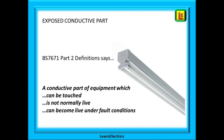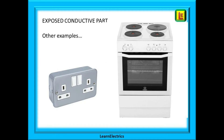If we start with exposed conductive parts, the definitions section tells us that these are conductive parts of electrical equipment which can be touched, are not normally live but can become live during an electrical fault. Here we have shown a fluorescent light fitting — the casing is made of metal so it is conductive. In normal fault-free conditions this casing is at zero volts and touching it will not give you an electric shock. But during a fault, let's say the live conductor works loose and touches the casing — until the fuse blows or the breaker trips, the casing will be at 230 volts. Touching it now is likely to give you an electric shock.